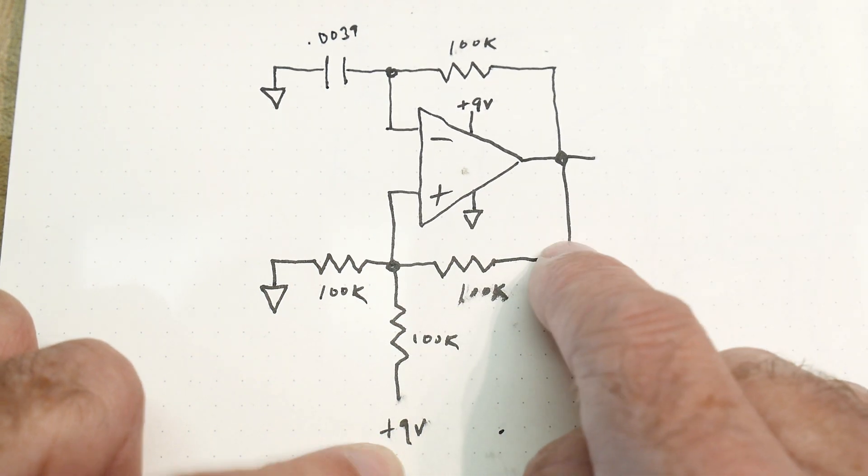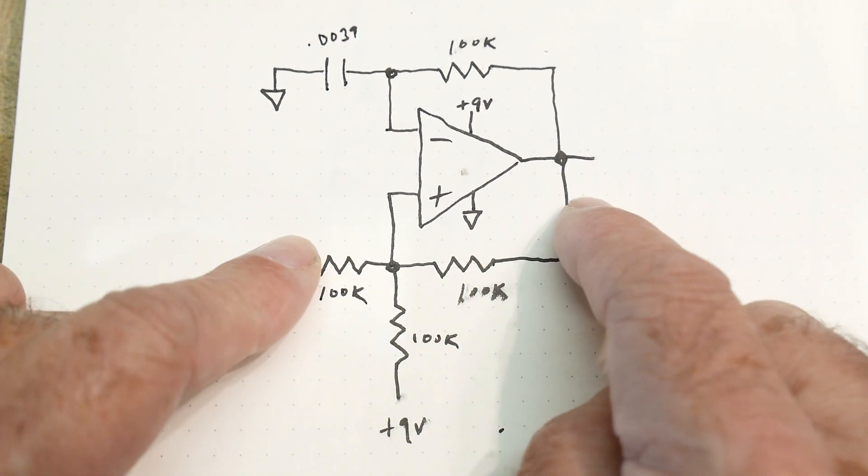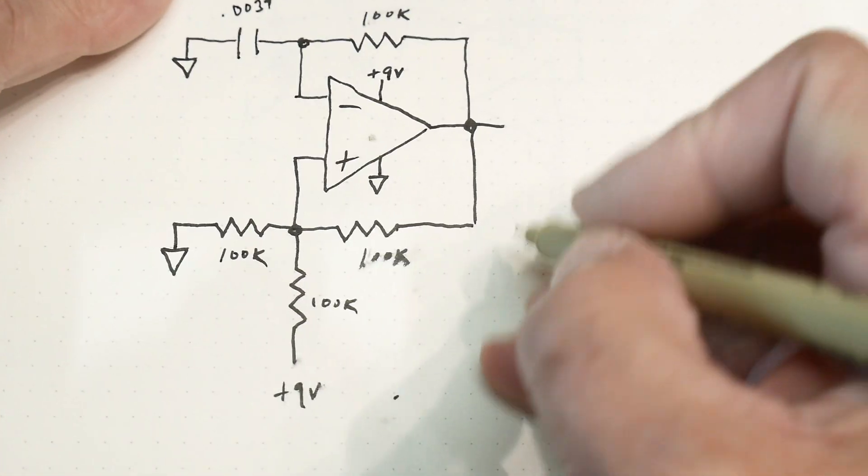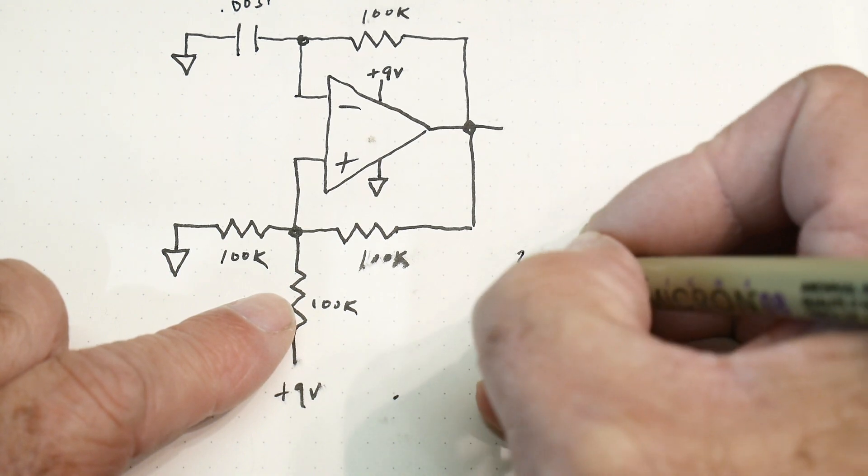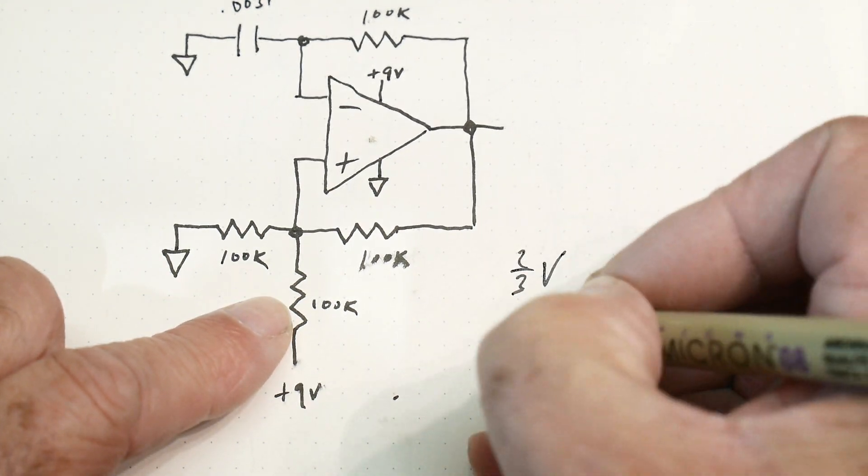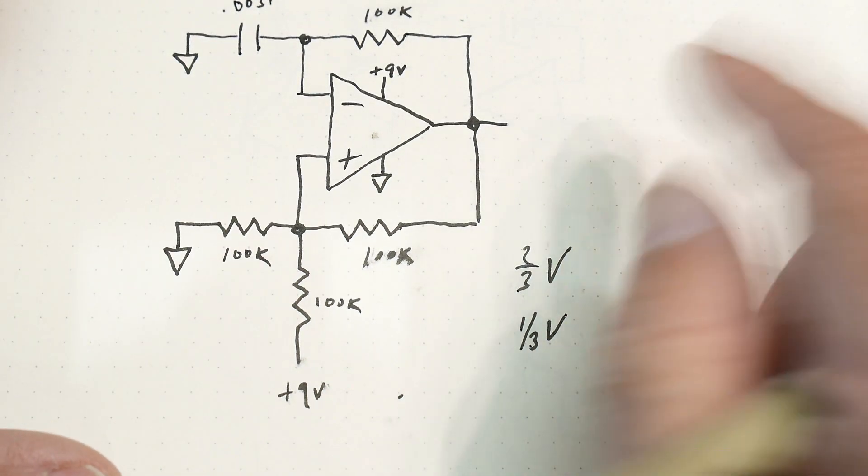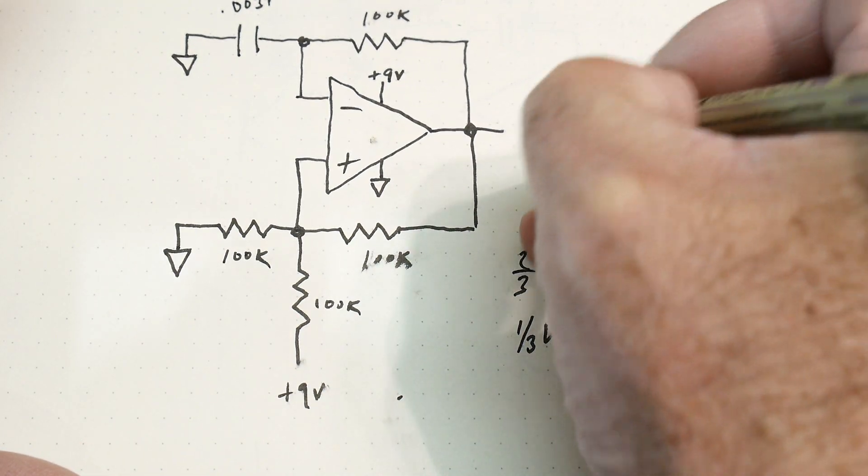And then if this is ground, you have two grounds and one plus V, you'll have one third of plus V. So this node is going to oscillate between two thirds V and one third V. And then the output will go between V and zero.